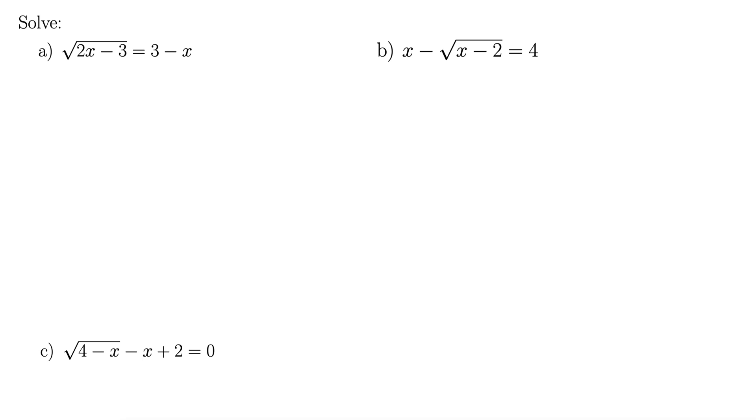These examples ask us to solve some radical equations with a little bit more going on. So let's see. In part a we have square root of 2x minus 3 equals 3 minus x. Now note that the square root is already isolated. So that is a good sign.